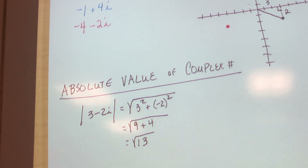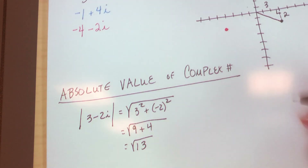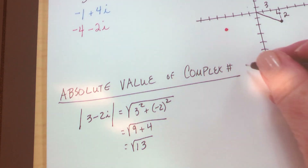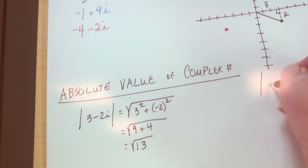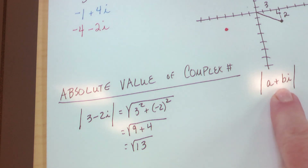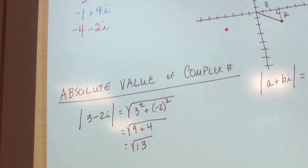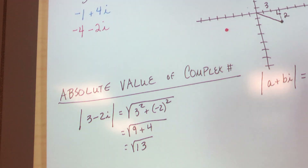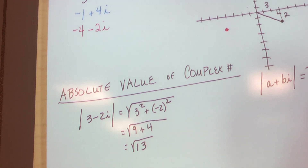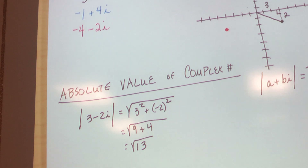Now I'm going to let you make the formula up. The absolute value of any complex number a plus bi is equal to the square root of a squared plus b squared. So this is easy, isn't it?